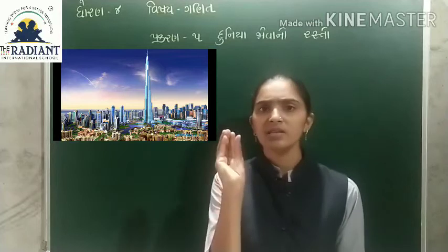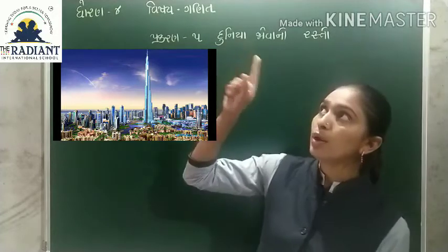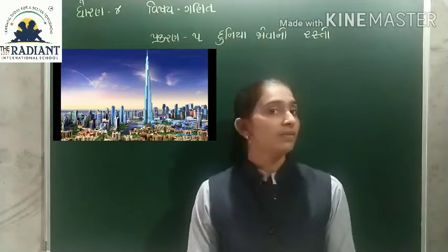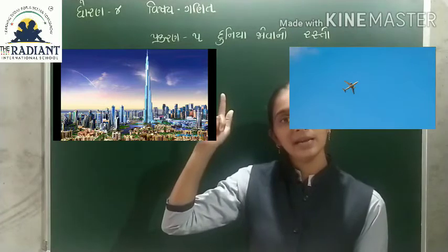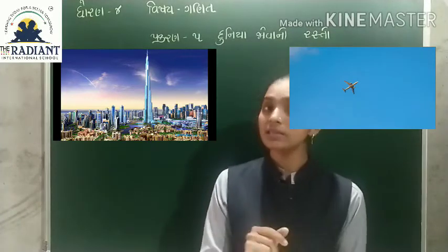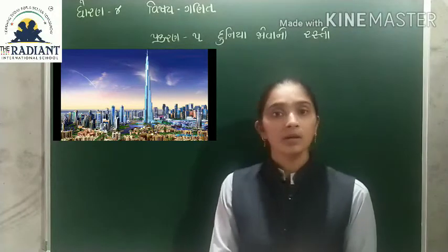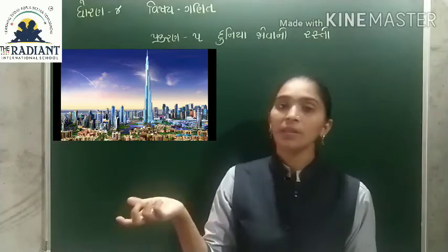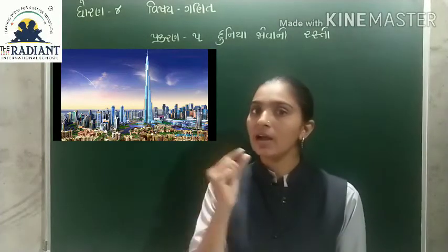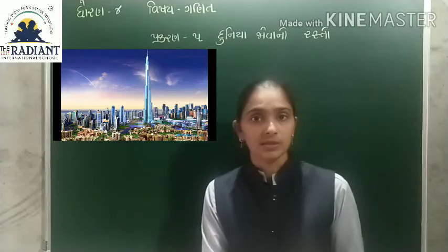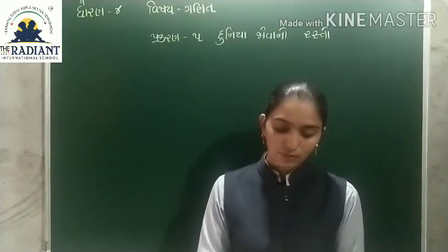નીચેની બધી વસ્તો ઉપરથી નાની-નાની દેખાય છે. ઘરો, ઝાડ, રસ્તો, કેડી — આ બધું ઉપરથી ખૂબ સરસ, નાનું-નાનું, ગળ ગળ અને કેડી જેવું દેખાય છે. પછી ફૂગ્ગો આગ સામે આવ્યો.